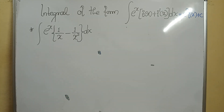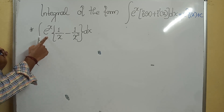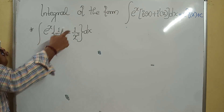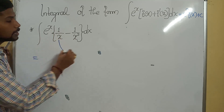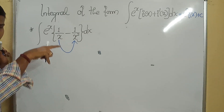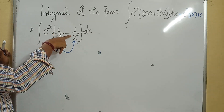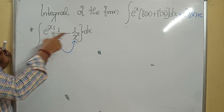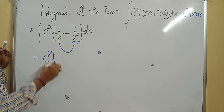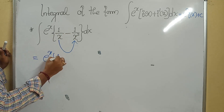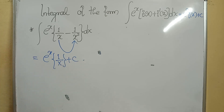Observe the next example: eˣ into bracket [1/x minus 1/x²]. The derivative of 1/x is minus 1/x². So the first function's derivative is the second function, with the correct sign as well. That's why, by the property, the answer is eˣ times 1/x, plus c.